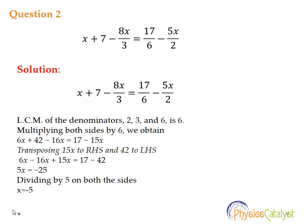Simplifying that, 5x is equal to minus 25. Dividing by 5 on both sides we get x is equal to minus 5.